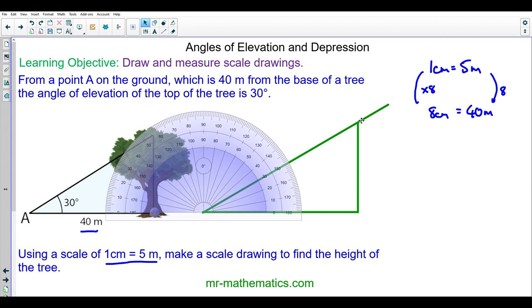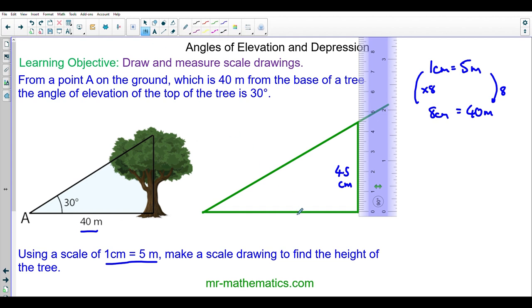Now we can measure the height of the tree using a ruler. The height of the tree is approximately 4.5 centimeters. So we have our base of 8 centimeters, perpendicular height or height of the tree as 4.5, and our angle of 30 degrees.